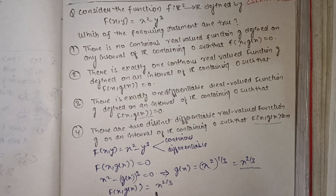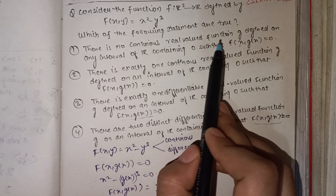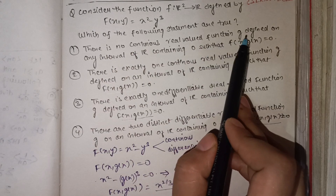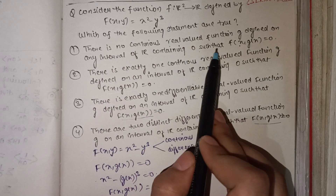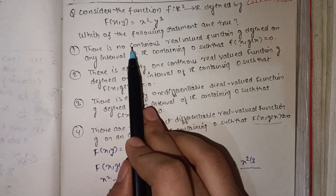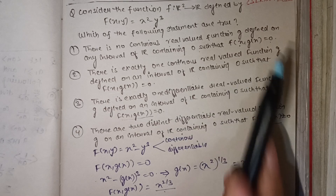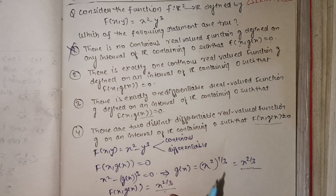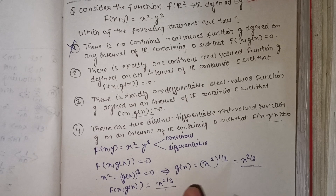This function g(x) = x^(2/3) is continuous at zero. Therefore, the first option — that there is no continuous real-valued function g defined on any interval of R containing zero such that f(x, g(x)) = 0 — is incorrect, because we found exactly such a function.